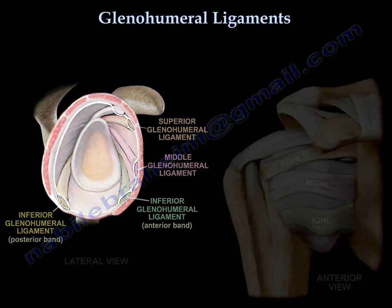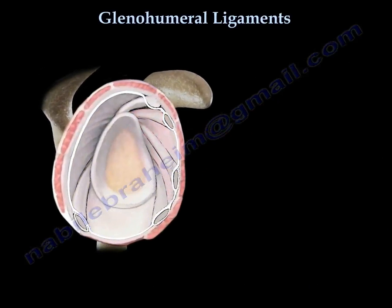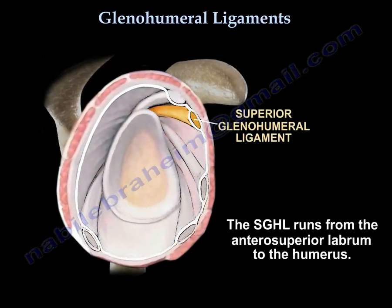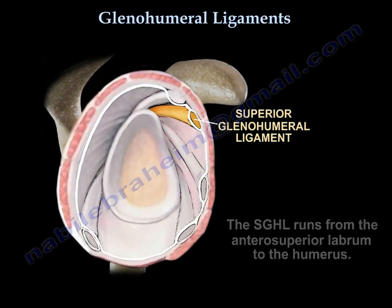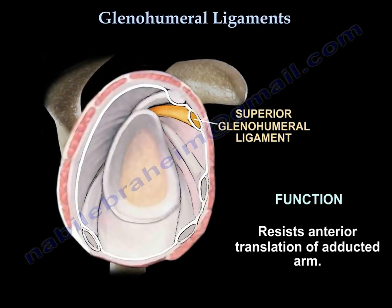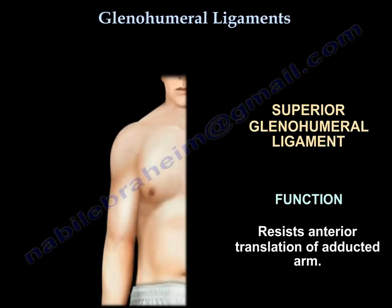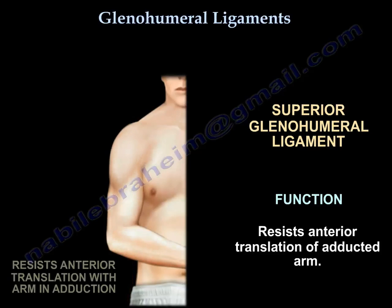The superior glenohumeral ligament runs from the anterior superior labrum to the humerus. Its function is to resist anterior translation of the adducted arm.